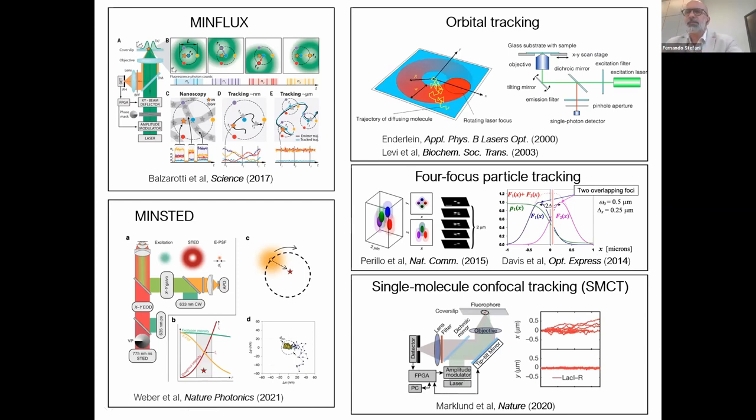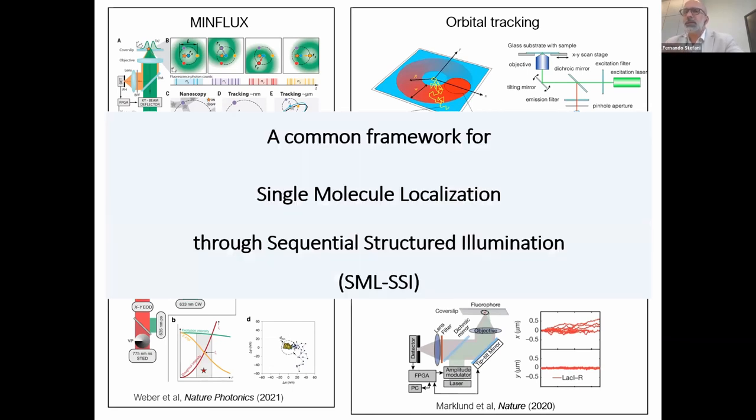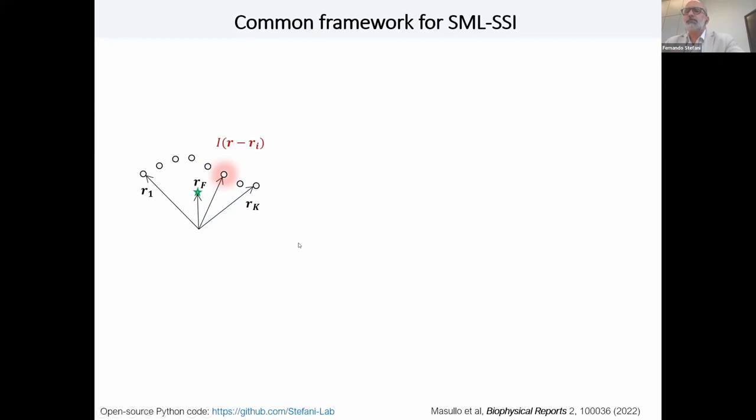So why do I show you this? Because over the years, different groups have been trying to localize fluorophores very precisely. And they have developed methods for that. But these methods were developed independently using different hardware, different data acquisition routines, and different data analysis algorithms. So they seem quite different, but in fact, they can all be described with a common framework. And that's important not only for understanding better these methods, but also to develop new ones. And I will show you an example now. So the basic idea is you need an excitation field for fluorescence that is not uniform. It has to depend on position, this I_R. And we will shift that excitation field over a sequence of positions around the fluorophore in any way, like it is shown here schematically. And from recording the signal of that single molecule over those positions, we will infer the position of the fluorophore.